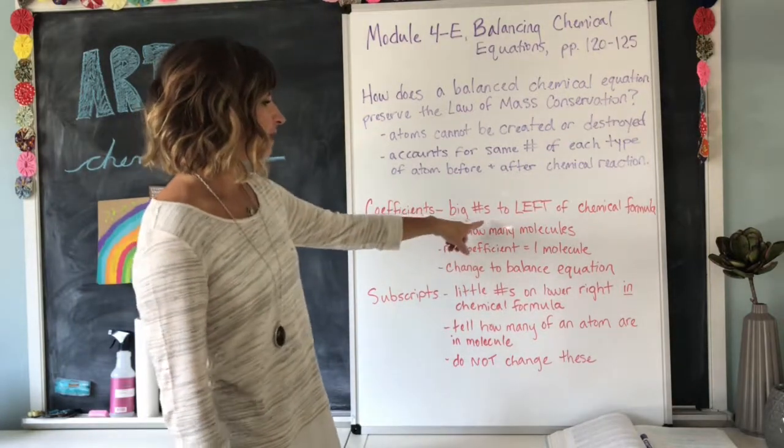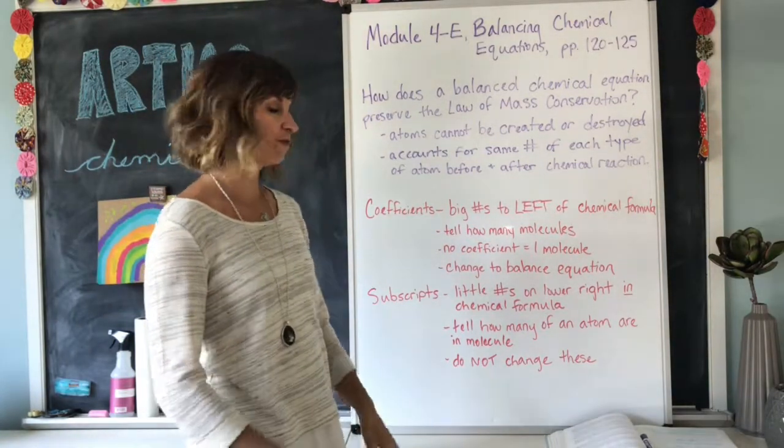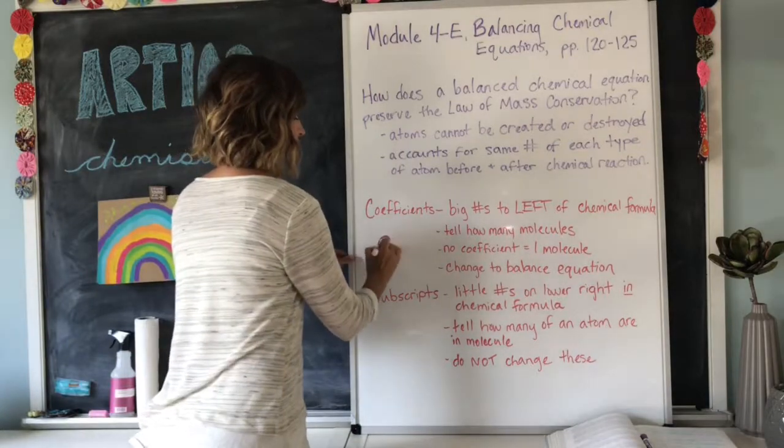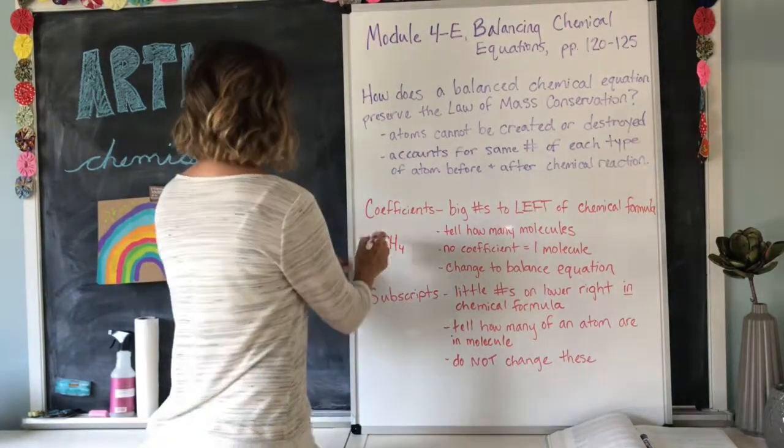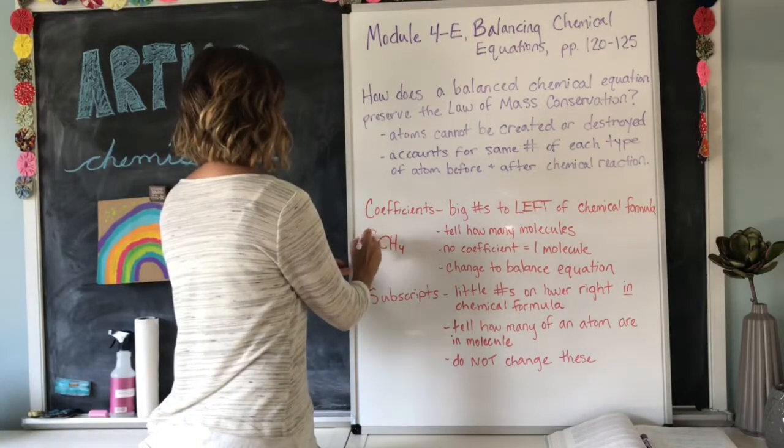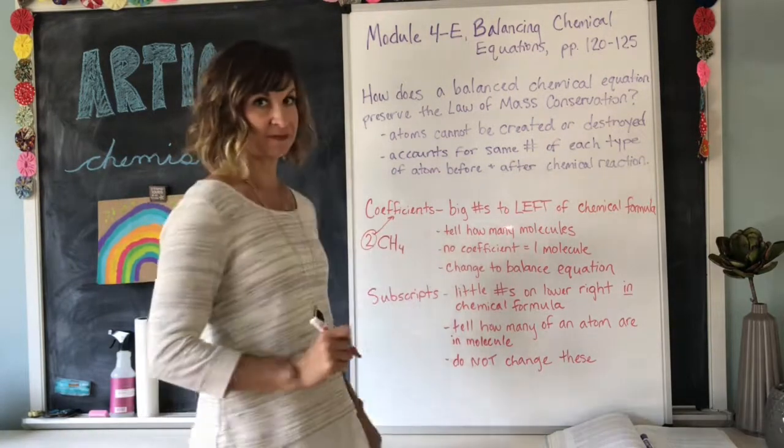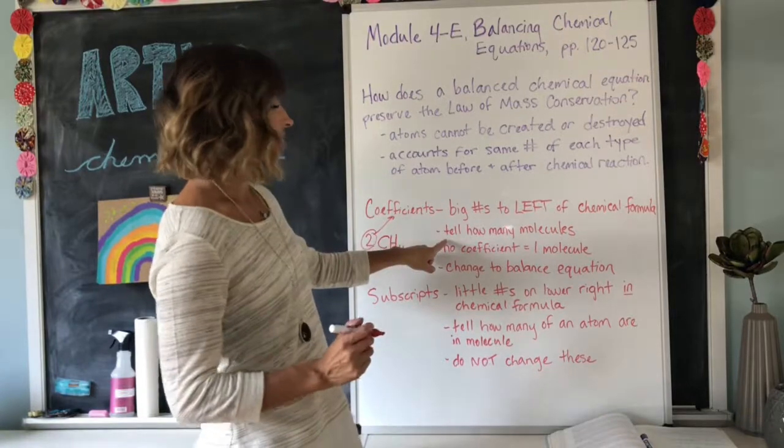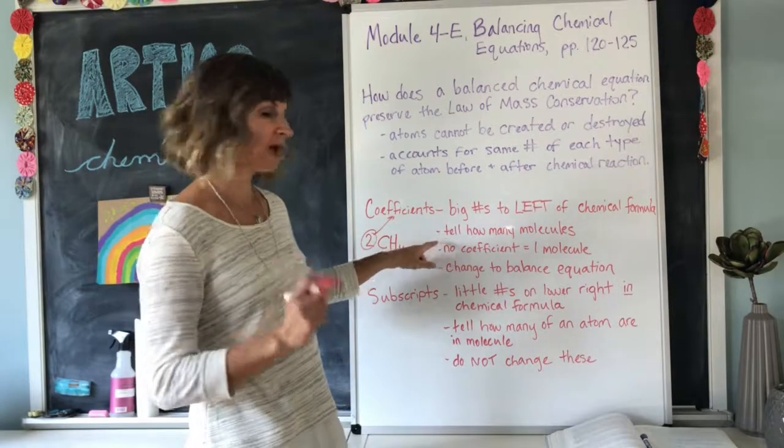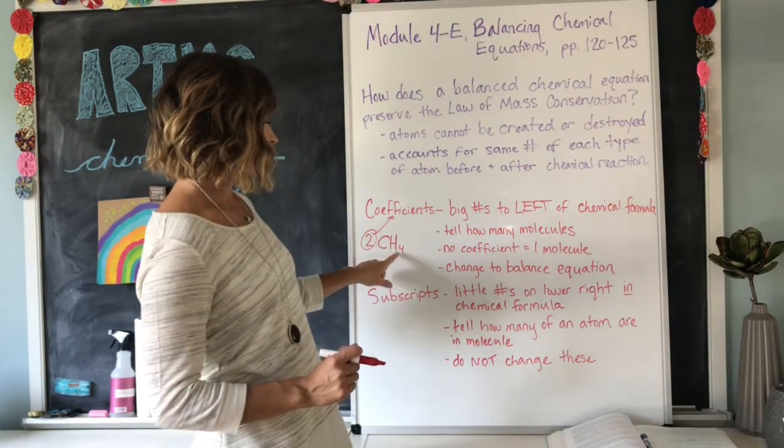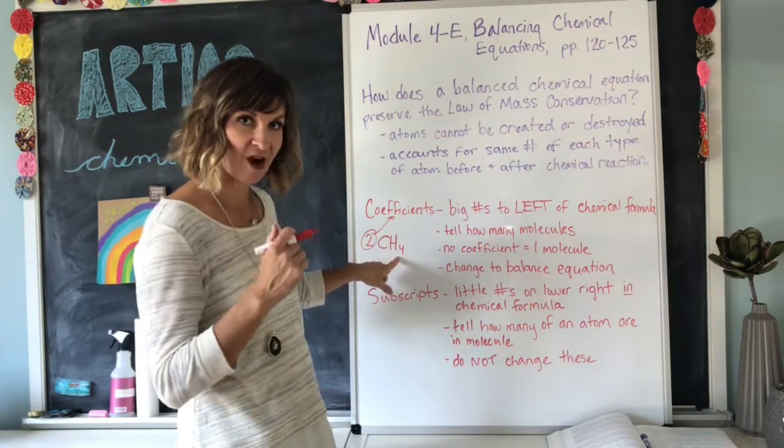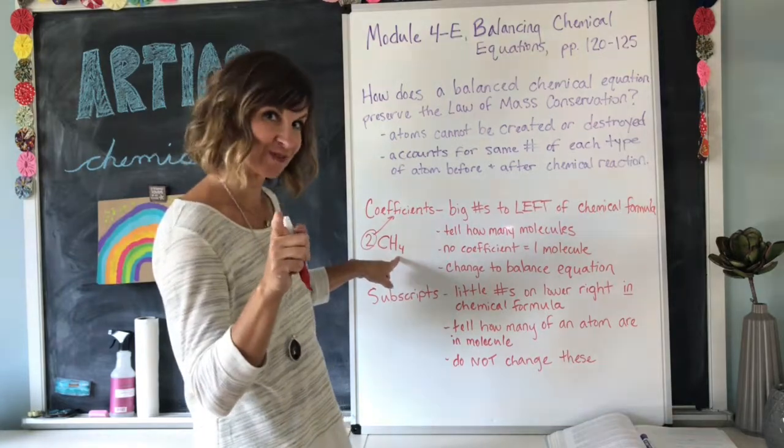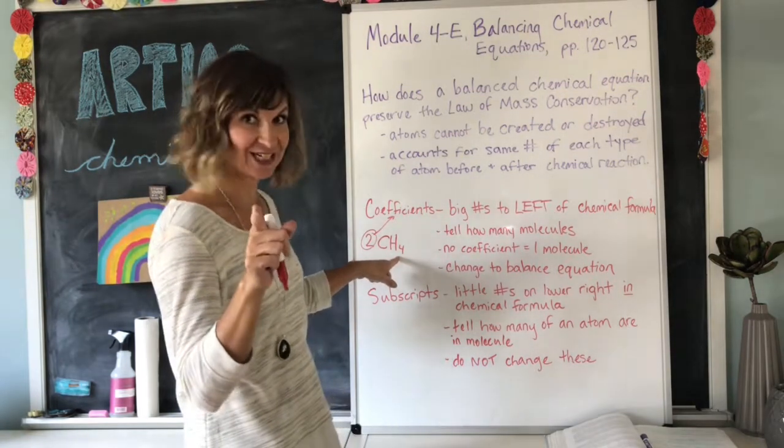Coefficients are those big numbers to the left of the chemical formulas. So if a chemical formula looks like this, CH4 for methane, if you have a big two out front, that is the coefficient. It tells how many molecules. The molecule itself is CH4, one carbon with four hydrogen atoms around that carbon.